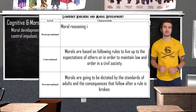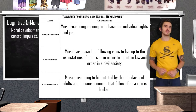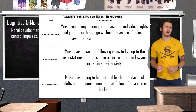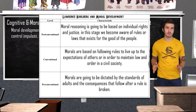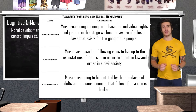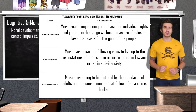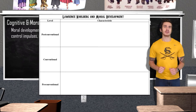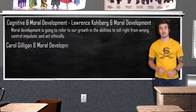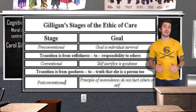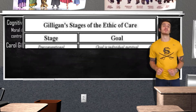The third and final level is post-conventional morality, where moral reasoning is based on individual rights and justice. At this stage we become aware that some laws go against universal moral principles such as the right to life. A major criticism of Kohlberg's theory is the sample he used. Carol Gilligan, a cognitive psychologist and former student of Kohlberg, adapted his theory for women, believing women follow a different set of moral development.